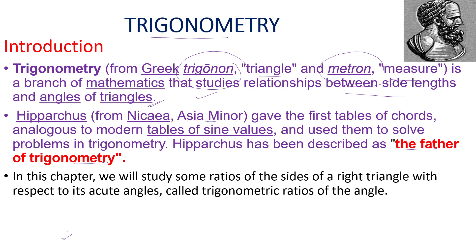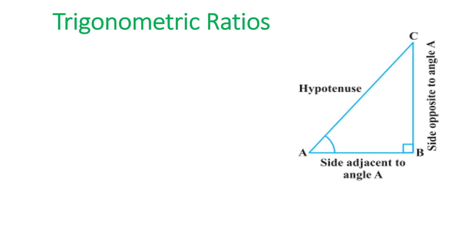Hipparchus from Asia Minor is known as the father of trigonometry. Now, what are the trigonometric ratios? If I consider a right triangle ABC in which angle B is 90 degrees, then the side opposite to angle B is known as the hypotenuse.